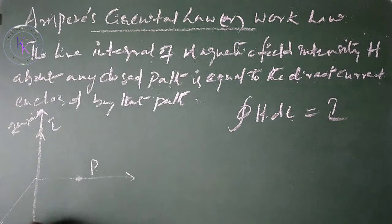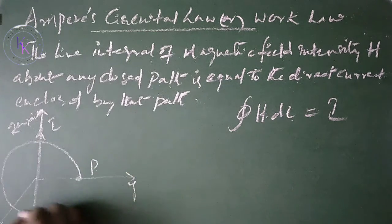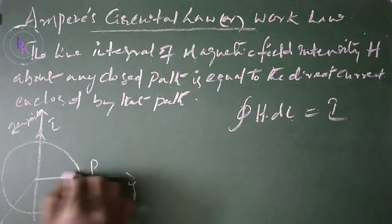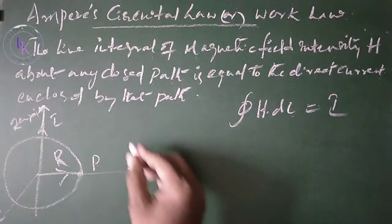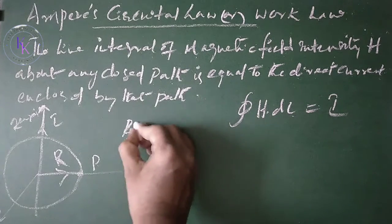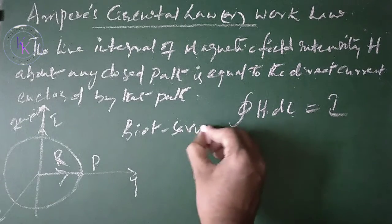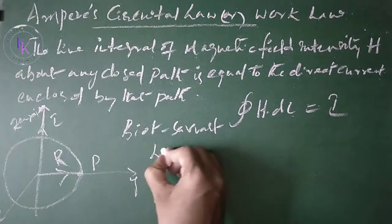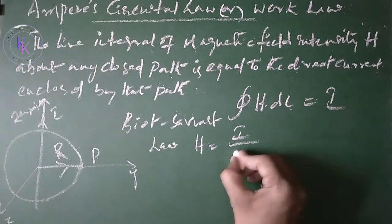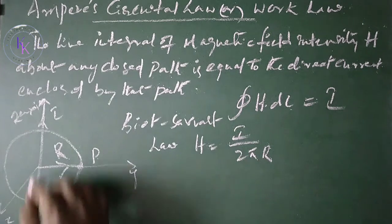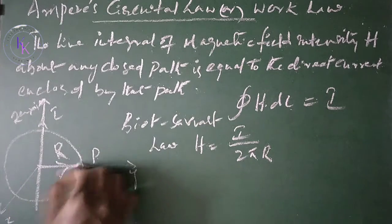In the xy-plane, let it be a circle having radius r. Then from Biot-Savart Law, H is given by I divided by 2πr, where r is the distance between the infinite line of charge and point P.